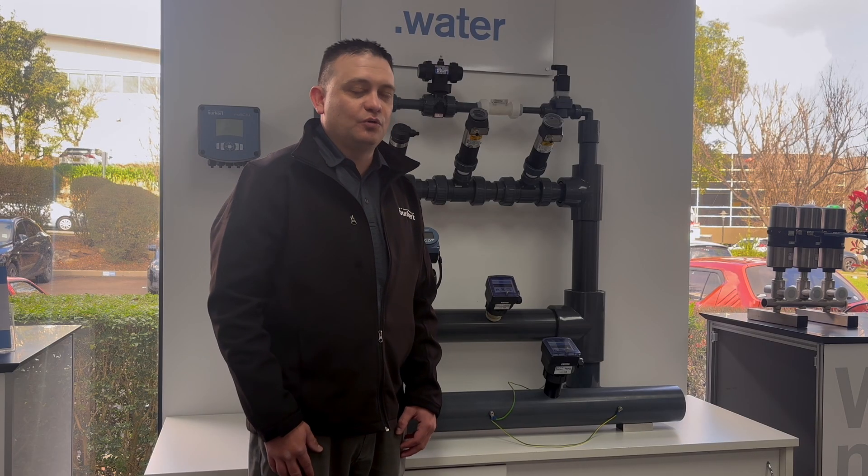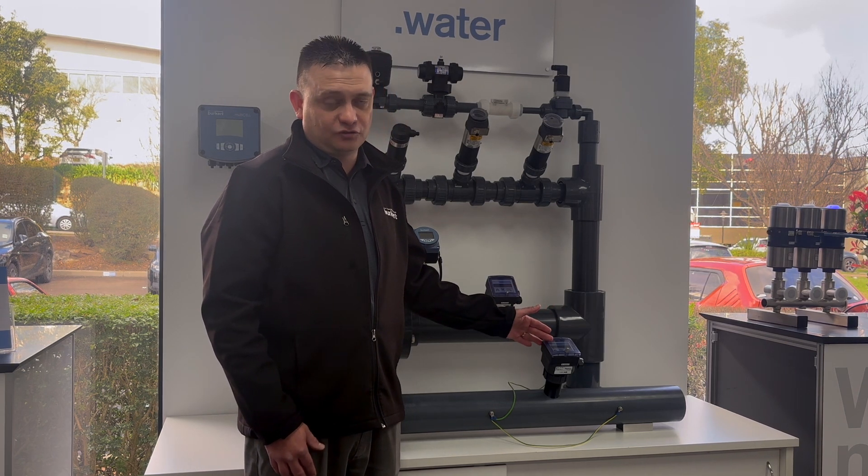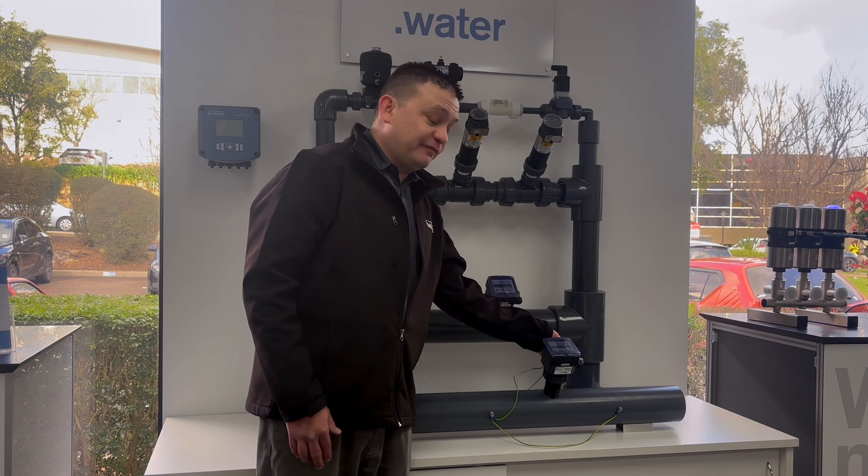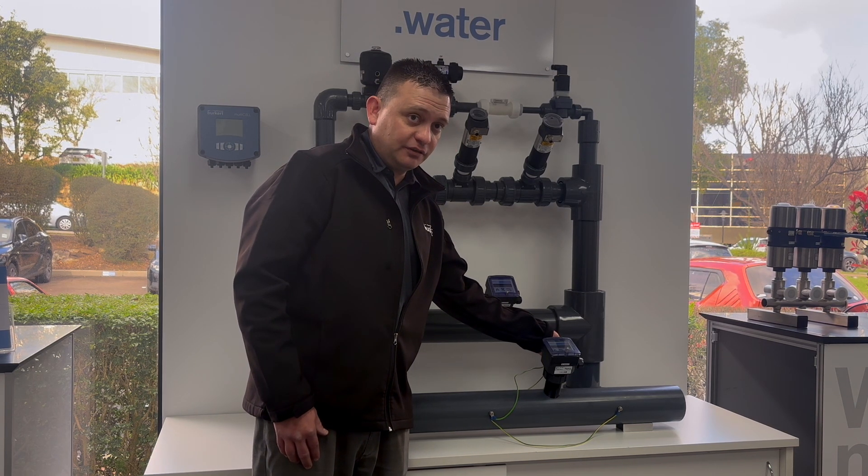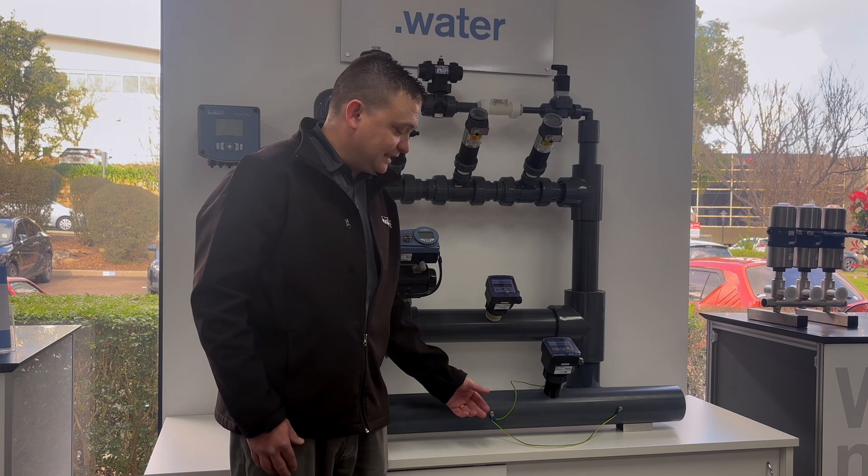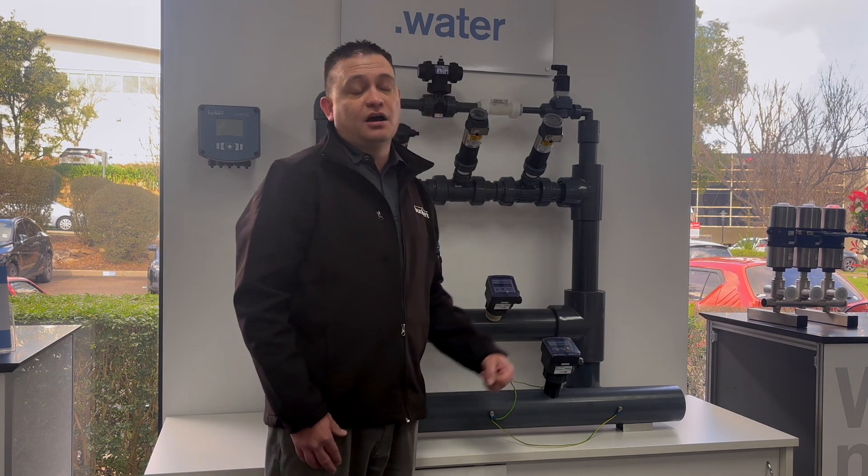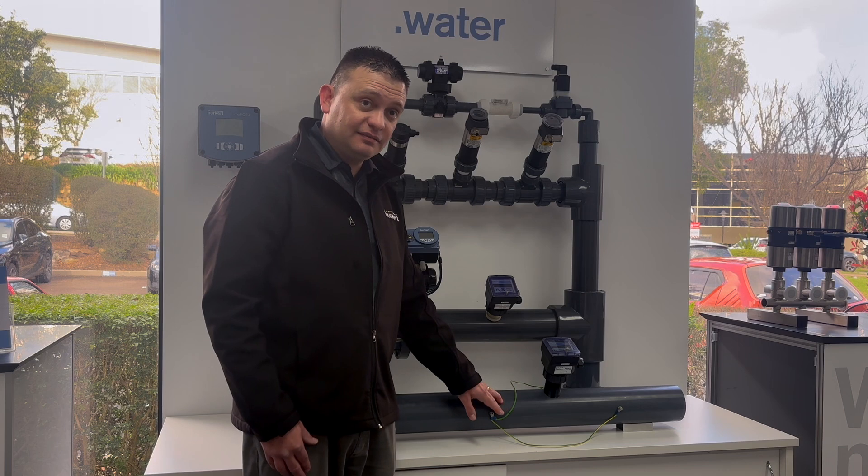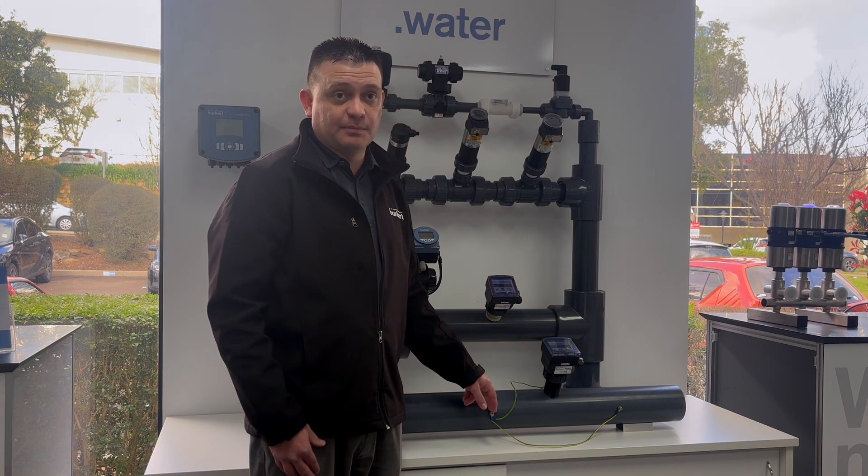Step two, we want to make sure that the unit is properly earthed. We have various earthing points displayed on our demonstration unit. First point is on the unit itself to ensure that the electronics are properly earthed, but also important is the upstream and downstream points on the pipework are properly earthed with earthing studs, especially in a PVC installation to ensure that we reduce the effects of EMF.